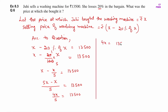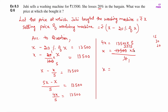Now 4X is equal to 13,500 multiplied by 5. Left-hand side का denominator 5 right-hand side पे numerator में multiply हो जाएगा. So X is equal to 13,500 × 5 upon 4. Calculating: 13,500 × 5 = 67,500, और 67,500 ÷ 4 = 16,875. So X is equal to 16,875.